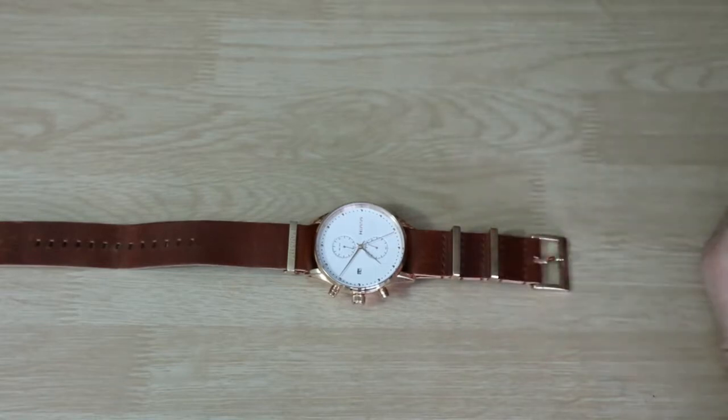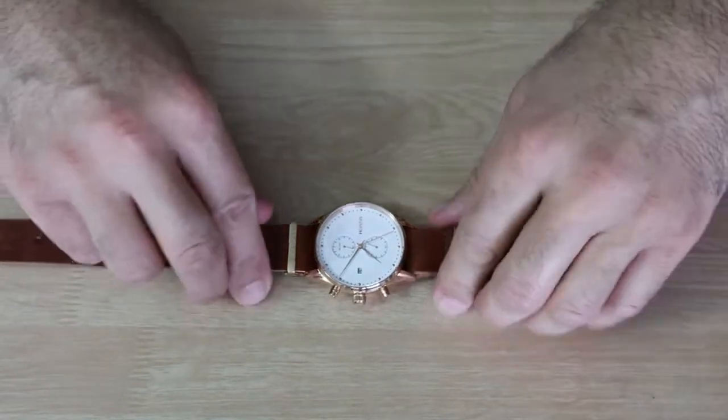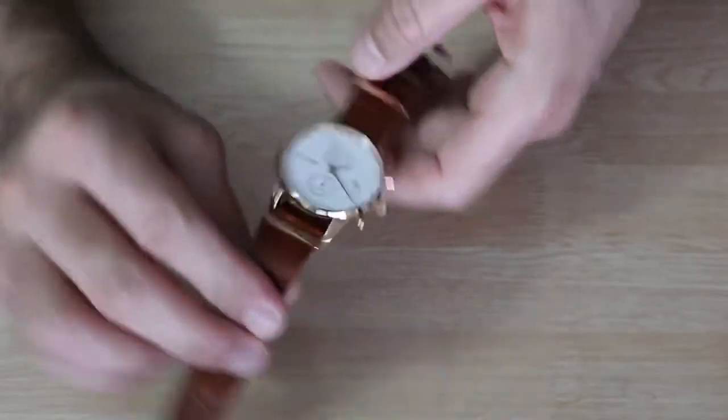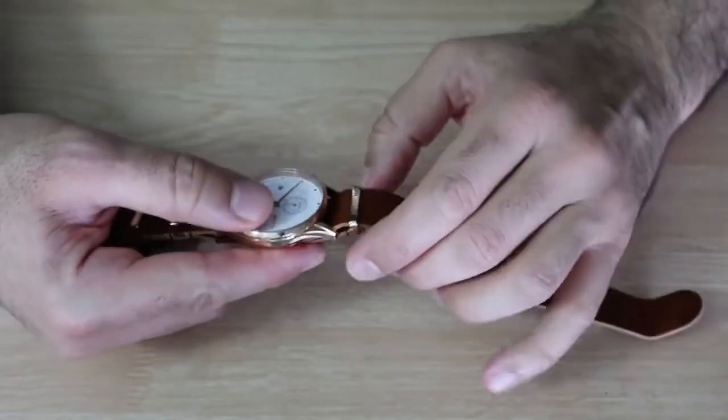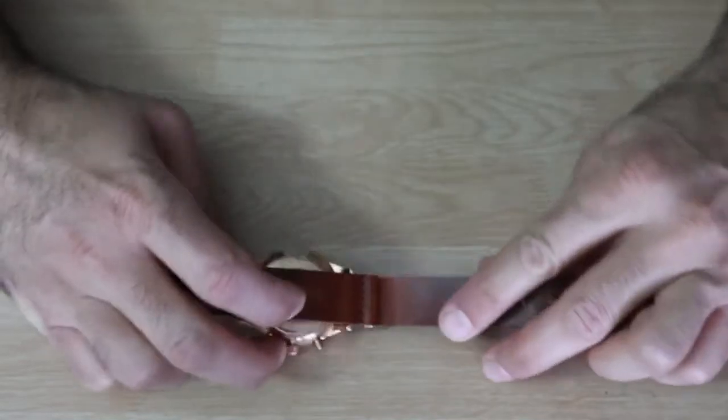In this video I want to show you how to change the battery of a Movement Voyager rose gold watch. Because this watch has a screw-on back cover, the instructions I'm going to show you apply also to other watches with a screw-on back cover.